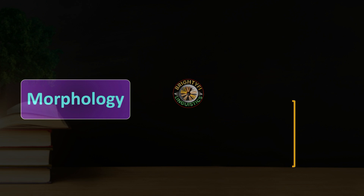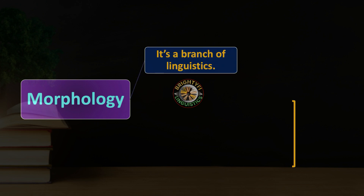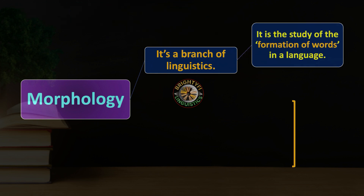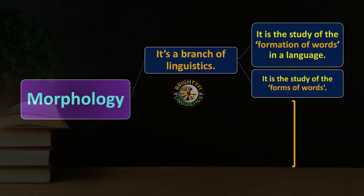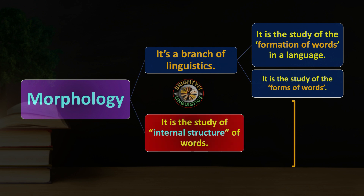Morphology is a branch of linguistics concerned with the study of the formation and forms of words. It deals with the internal structure of words — the grammar of words — covering how words are formed, made, and altered to give a new shape or meaning. For example, the prefix 'un-' added before the root word 'like' gives us 'unlike.'